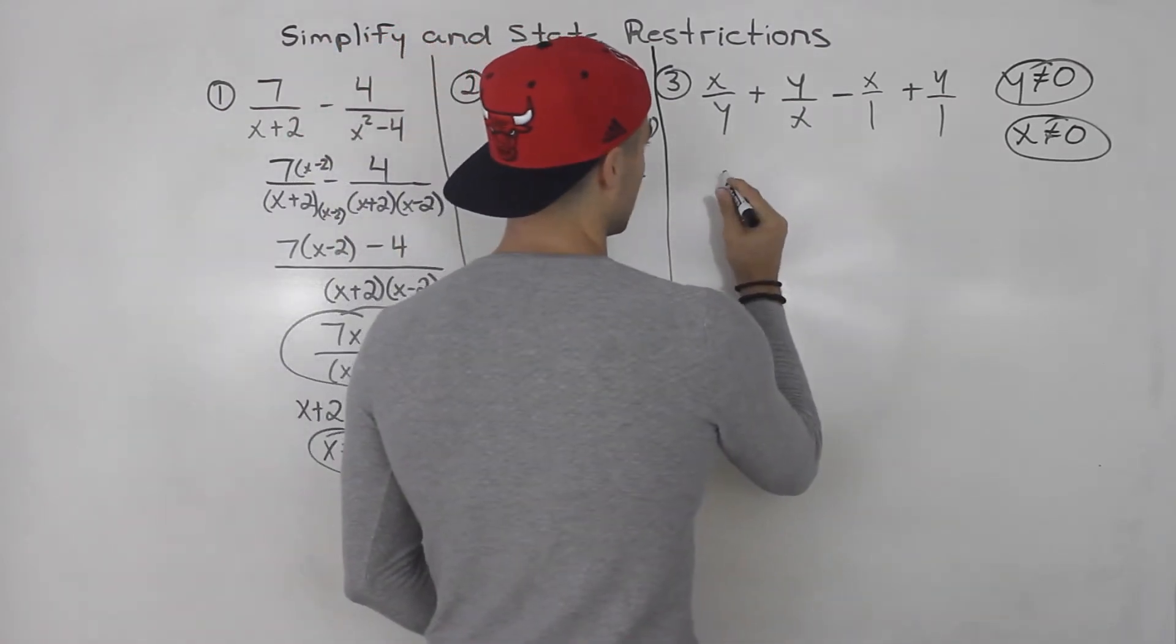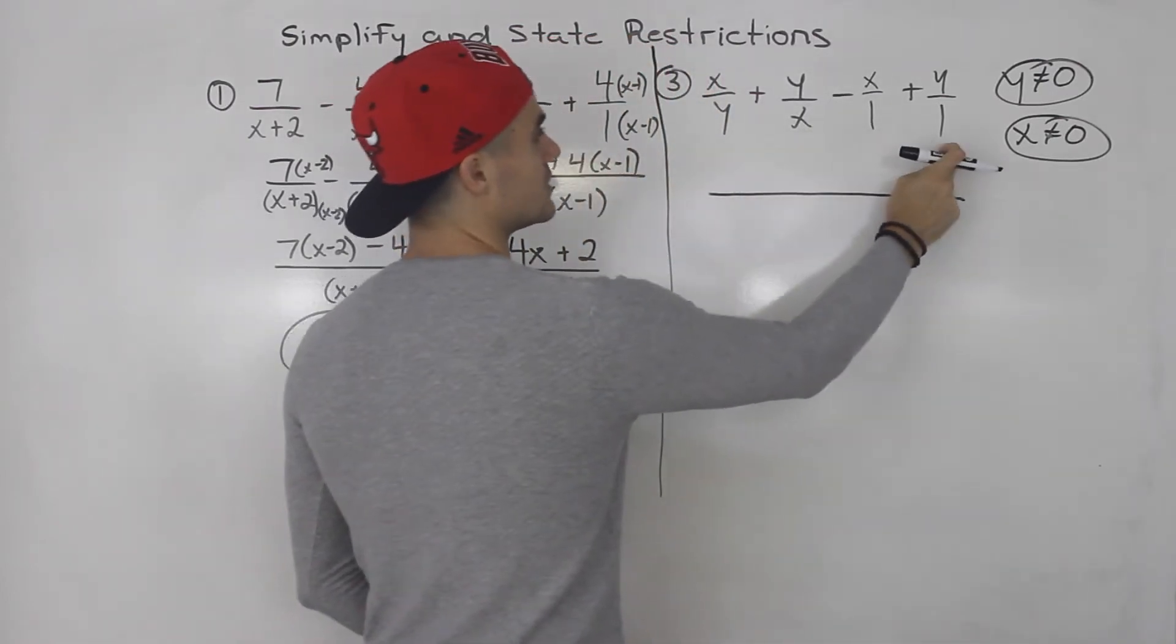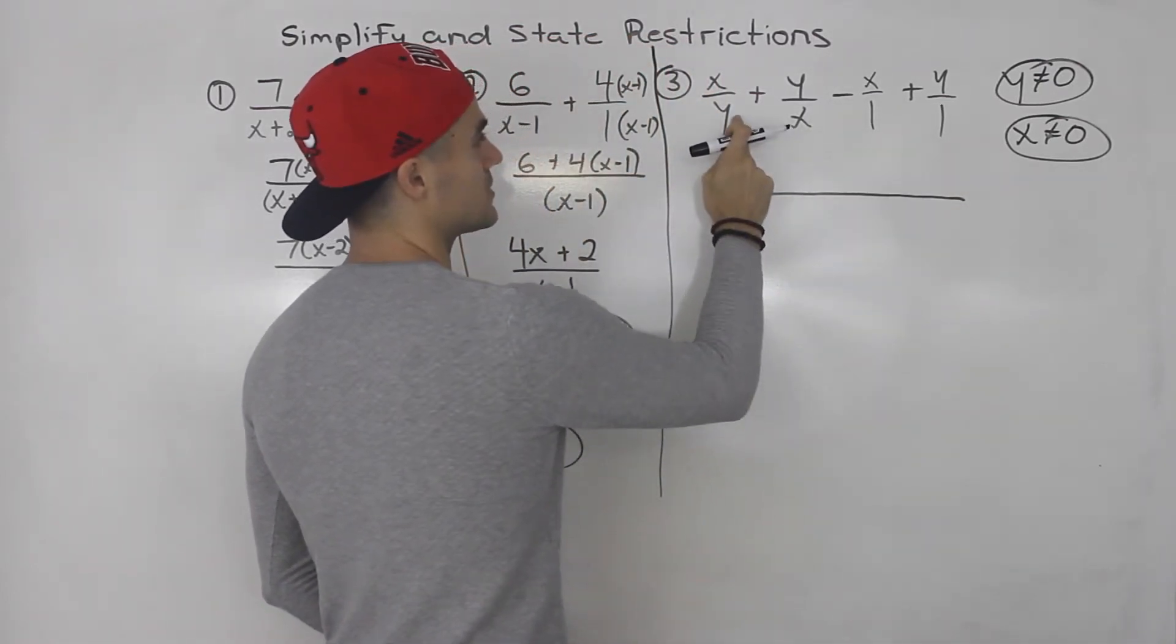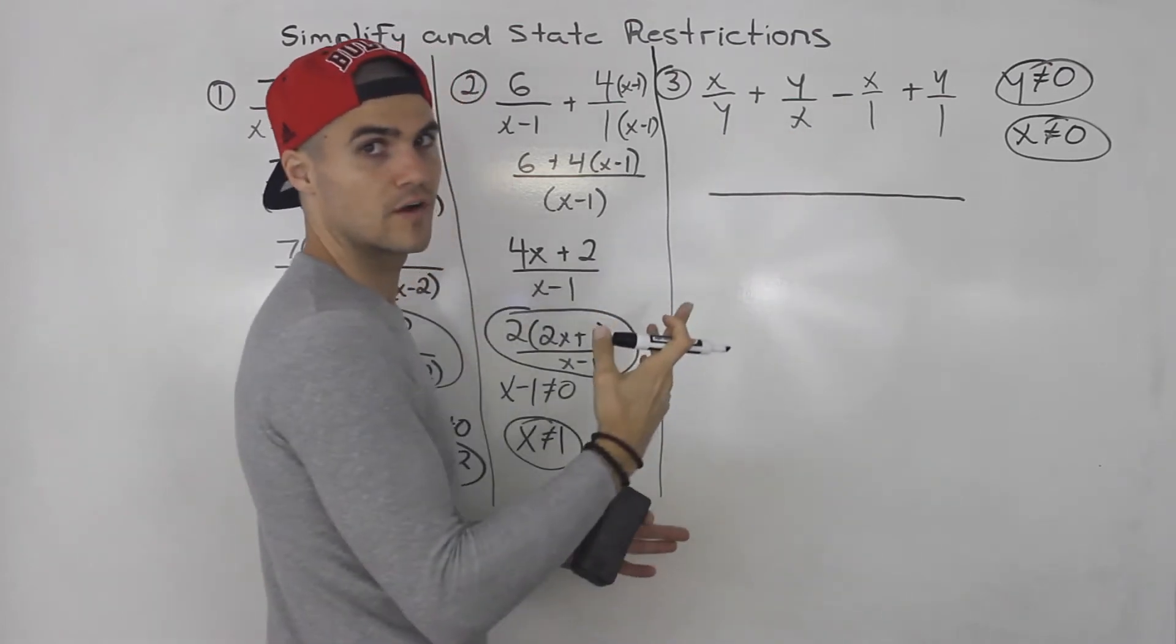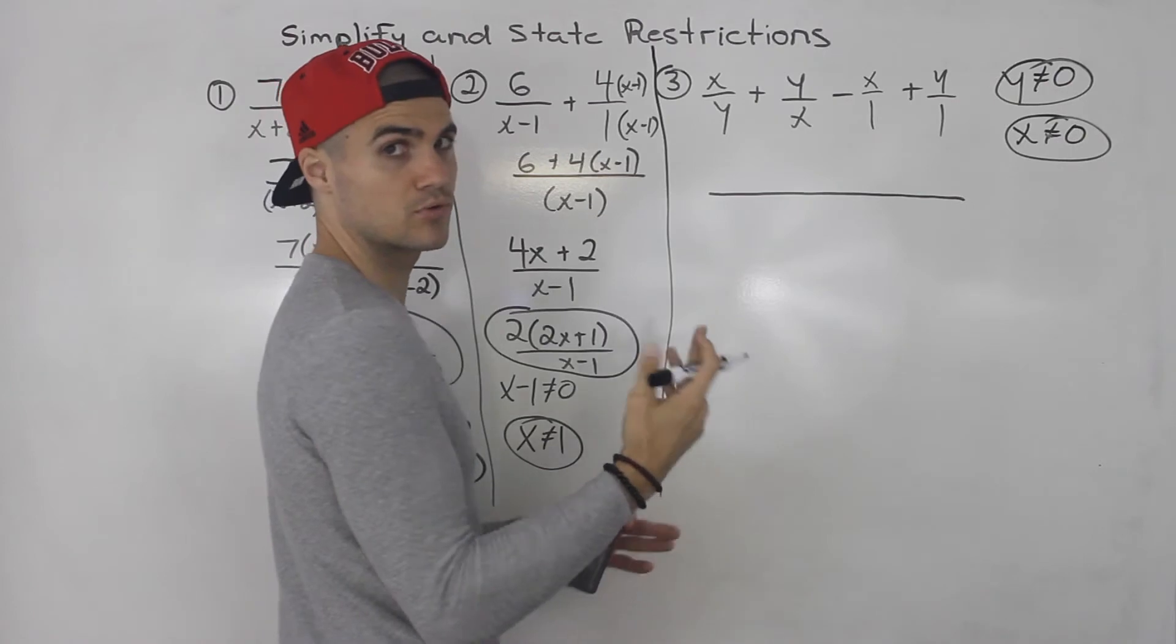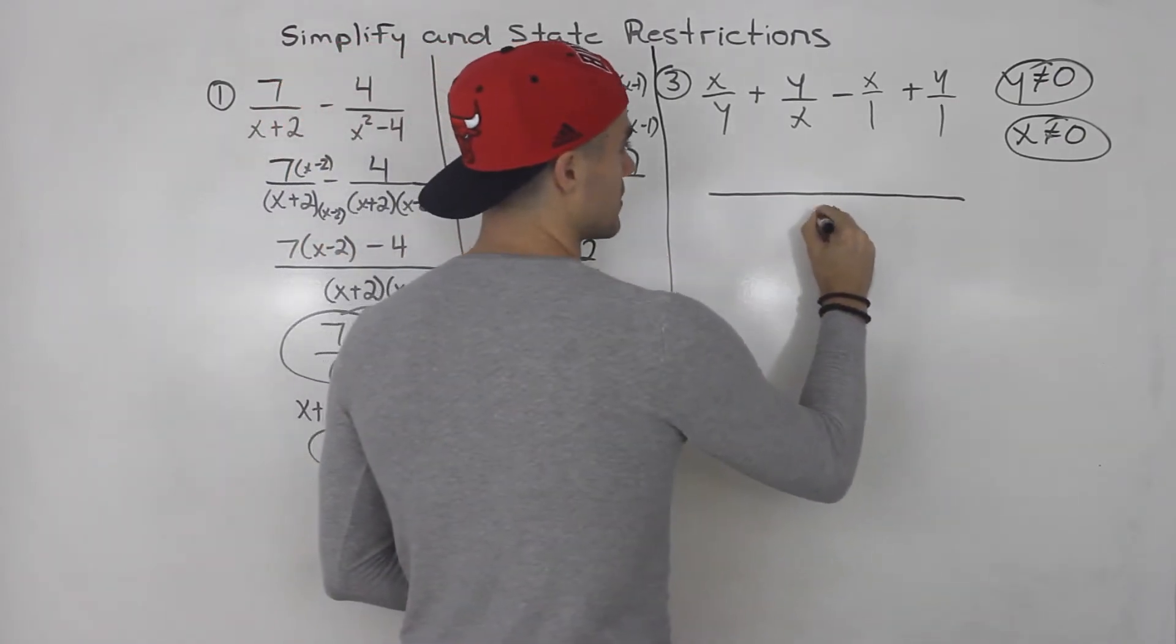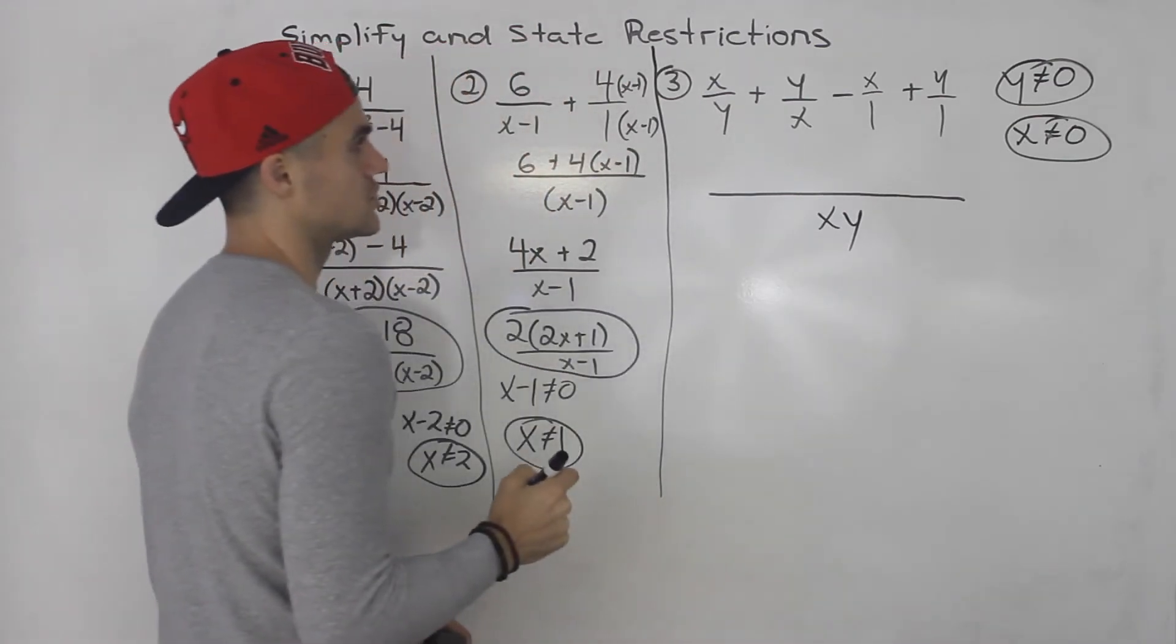And then, what is the lowest common denominator between all of these going to be? Well, notice that y and x, they're totally different variables, totally different factors. And as I mentioned in previous videos, when you have something like that, lowest common denominator is going to be them multiplied by each other.